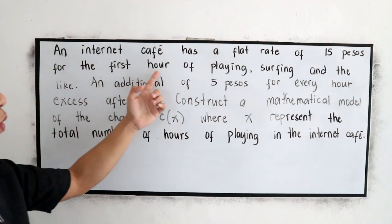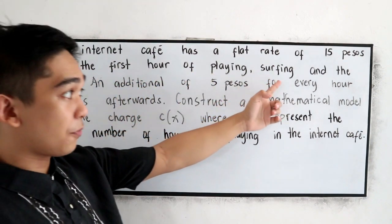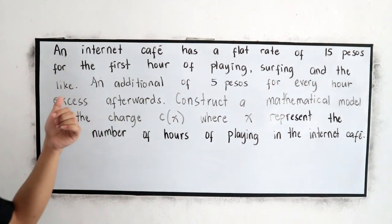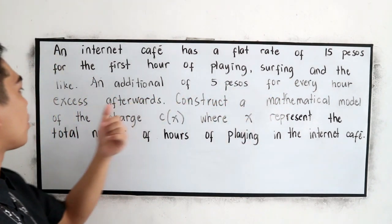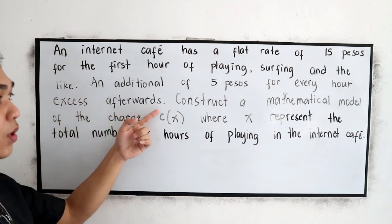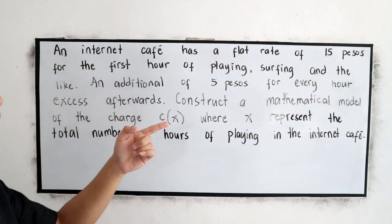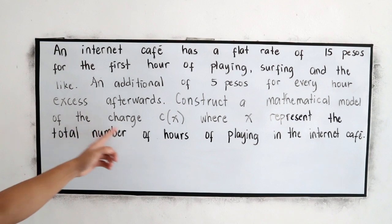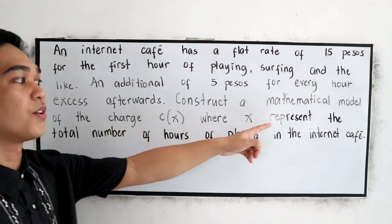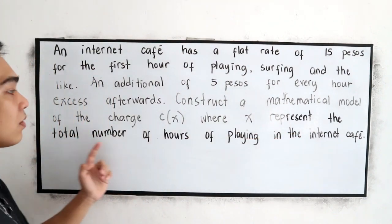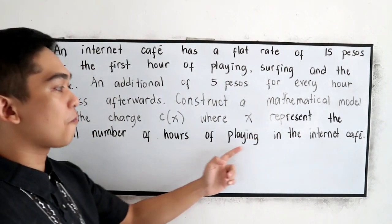An additional 5 pesos for every hour excess afterwards. Construct a mathematical model of the charge C(x) where x represents the total number of hours of playing in the internet cafe.